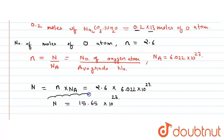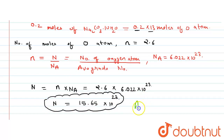This is our final answer — 15.65 into 10 to the power 23 — which is the number of oxygen atoms in 0.2 mol of Na2CO3·10H2O. By this we have completed the question and I hope I was able to help. Thank you.